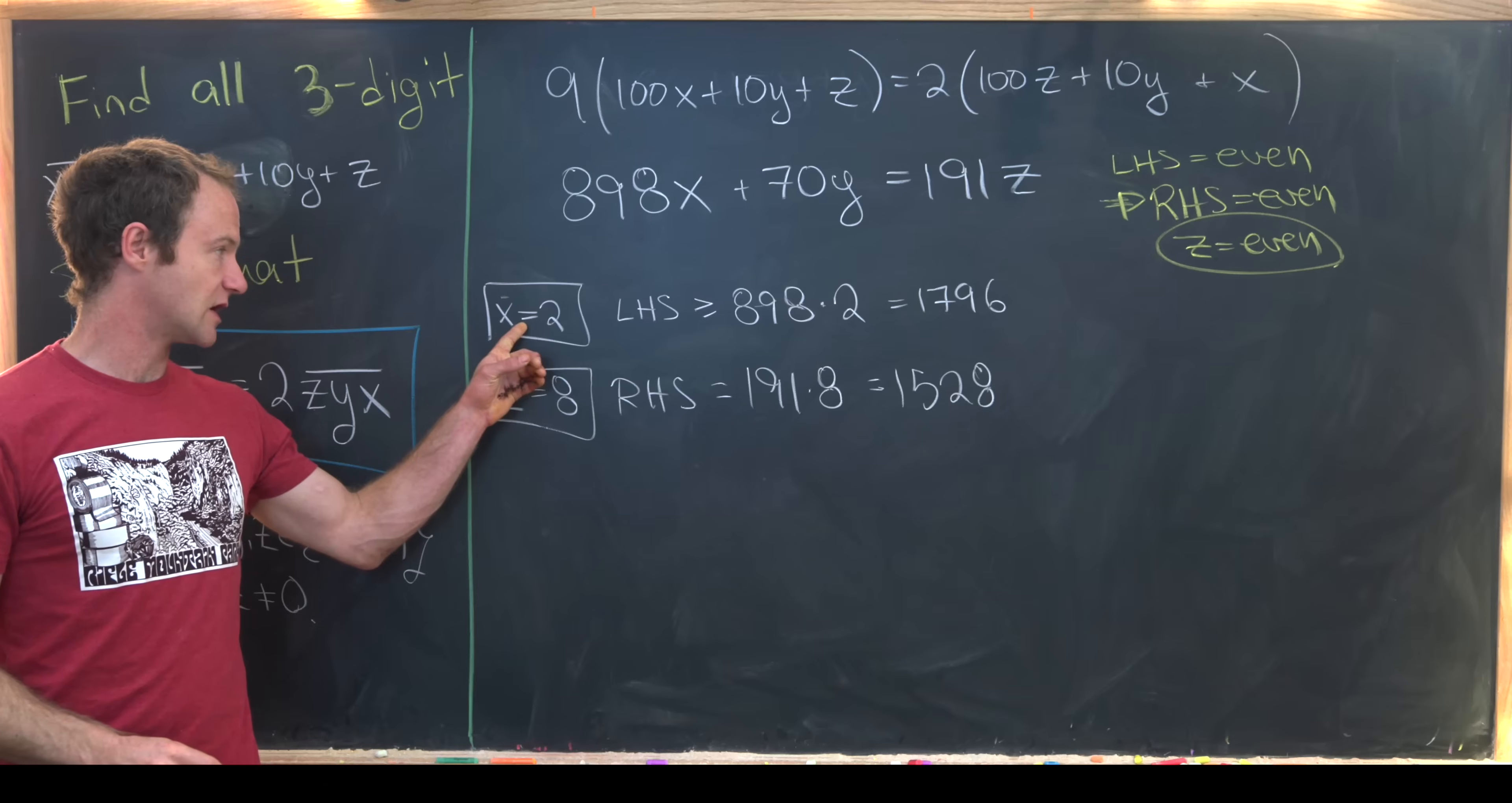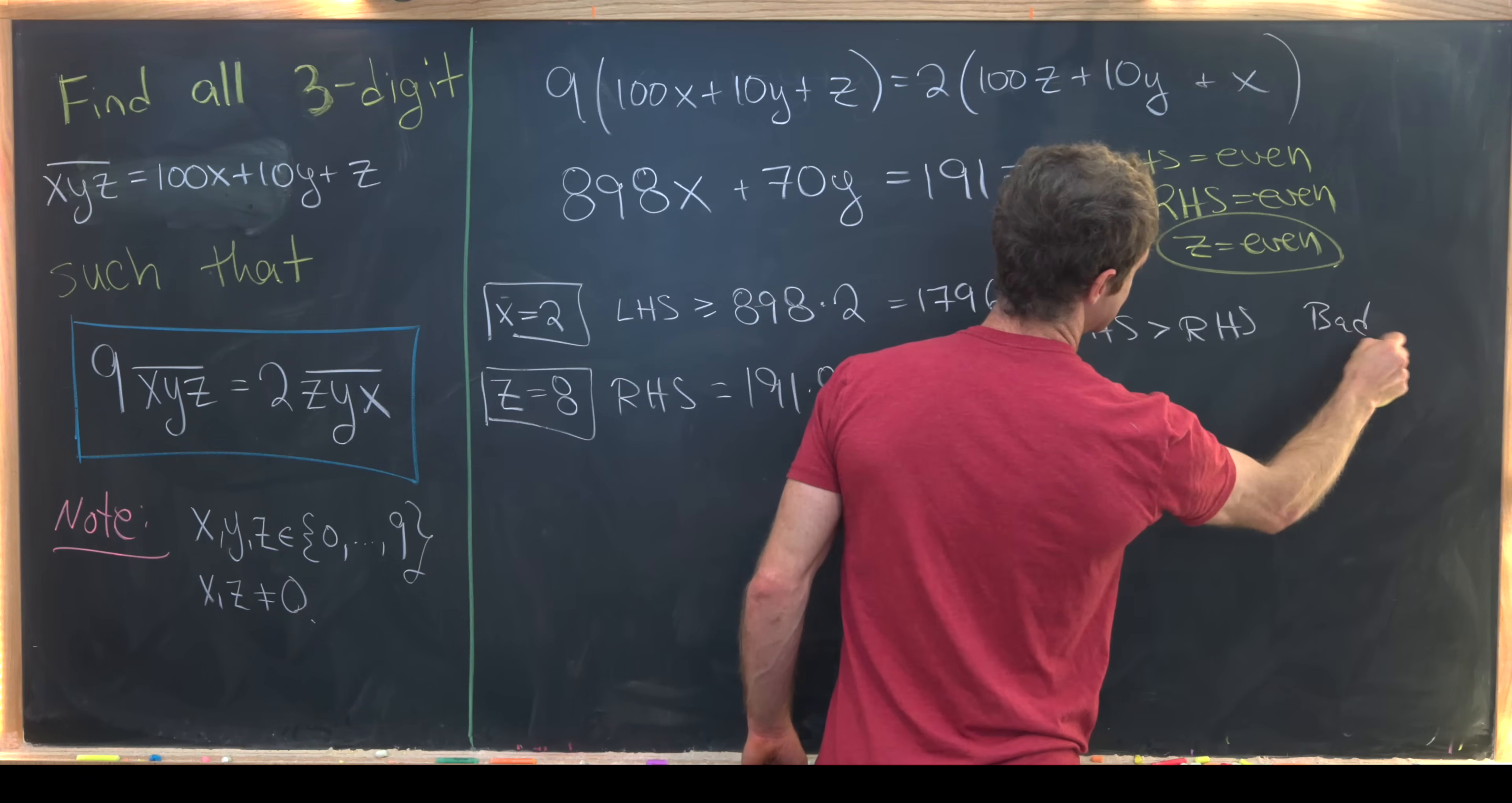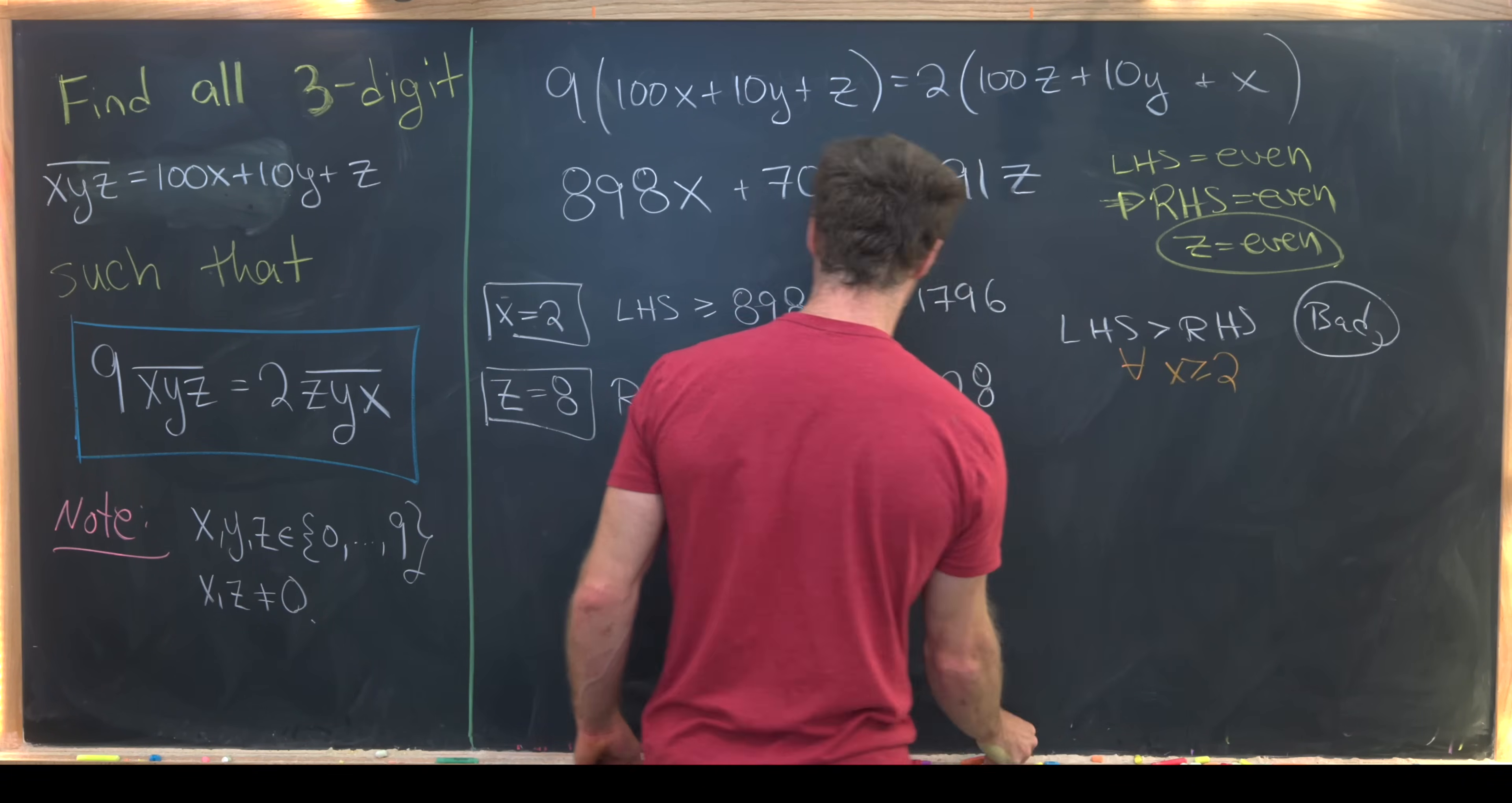In this setup right here where we have x equal 2 and z equal 8 we have the left hand side is strictly bigger than the right hand side, which is bad. And that's going to continue not just for x equals 2 but that's going to be true for all x bigger than or equal to 2.